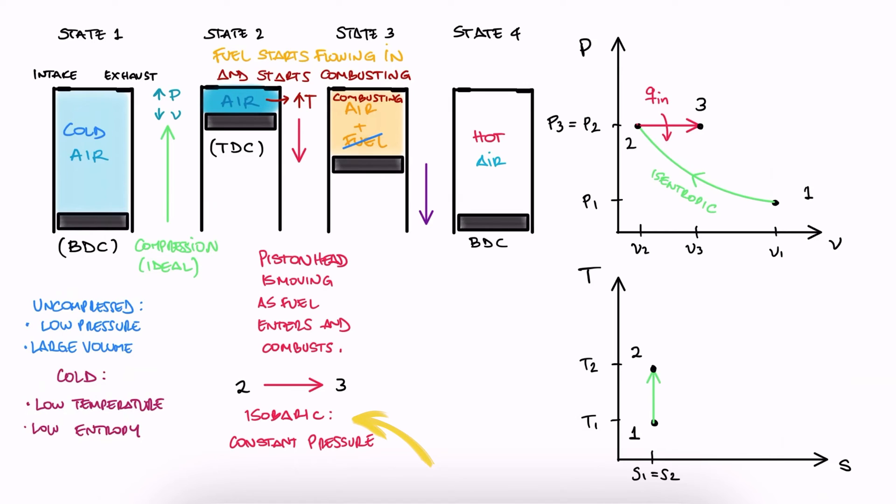Therefore, from 2 to 3 we move on a constant pressure line, horizontally on the PV diagram, and a curve that has a gentler slope than a constant volume 1 on the TS diagram.